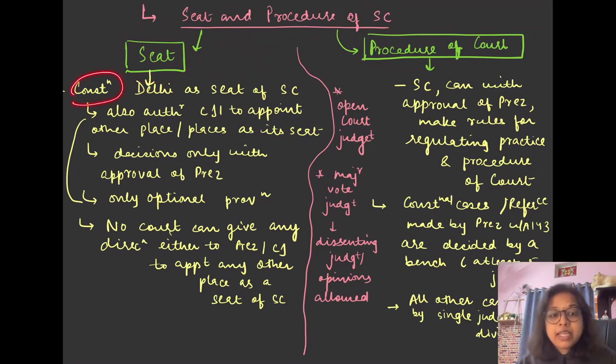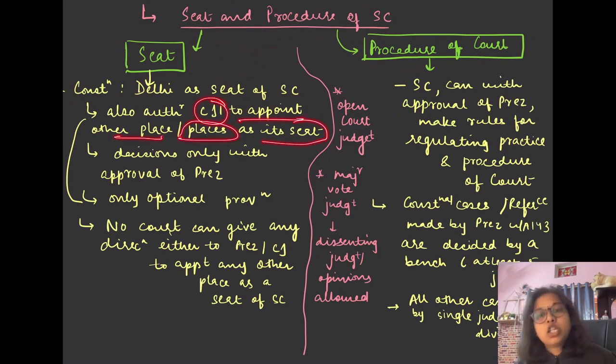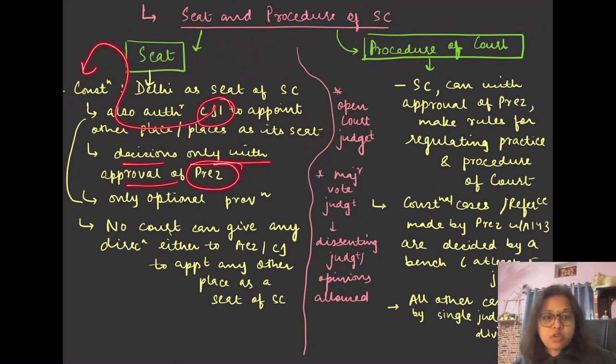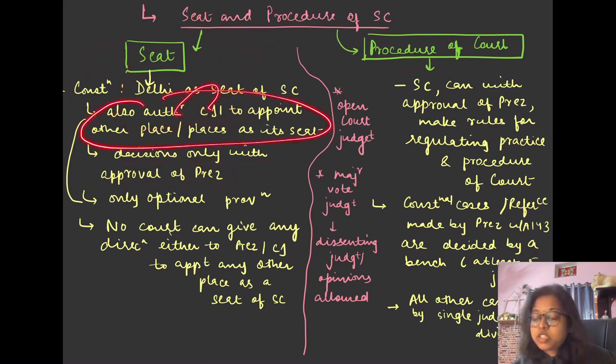The Constitution says that Delhi will be the seat of the Supreme Court. But the Constitution has talked about it, that it also authorizes the CJI, Chief Justice of India, to appoint any other place or any other places as the seat if for the convenience or any other important reason. If you think that you can make a seat in another place, then you can do it there. And the decisions will happen only with the approval of the President. The CJI will make the decision. The Constitution will give the power from the Constitution, but the approval needs the President.